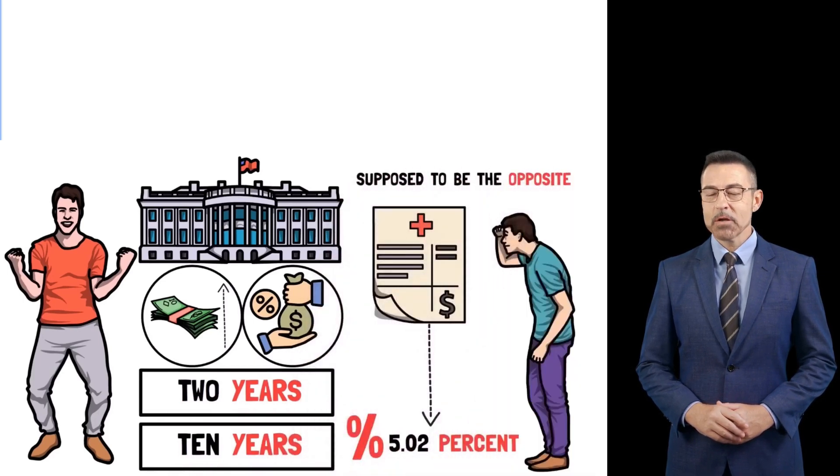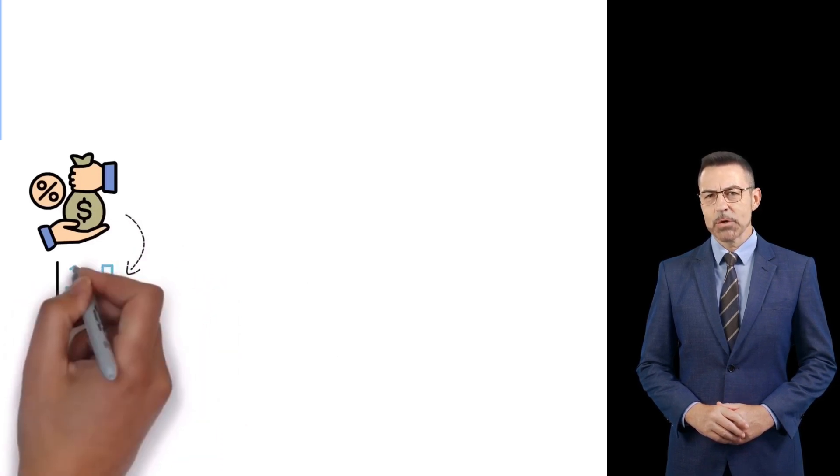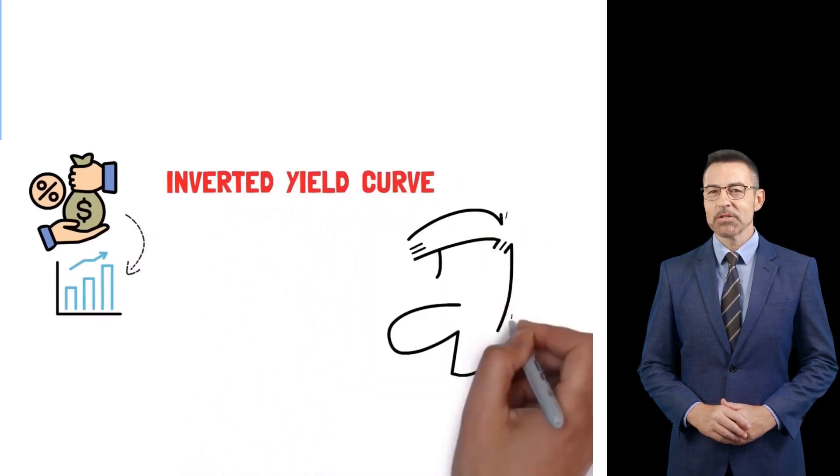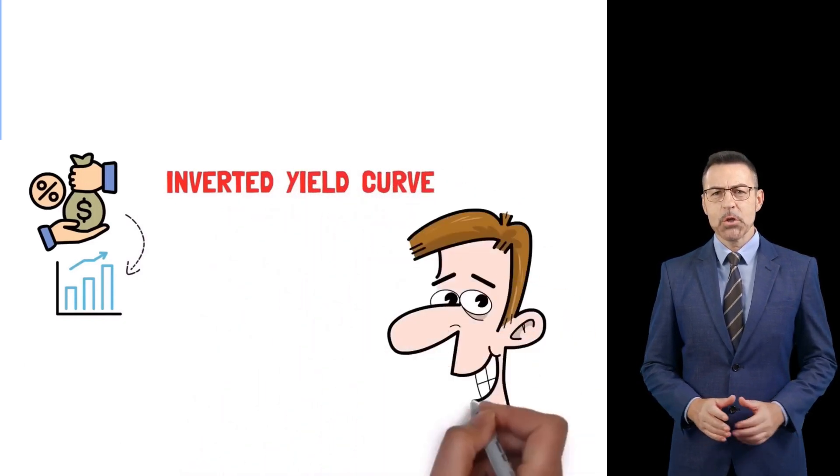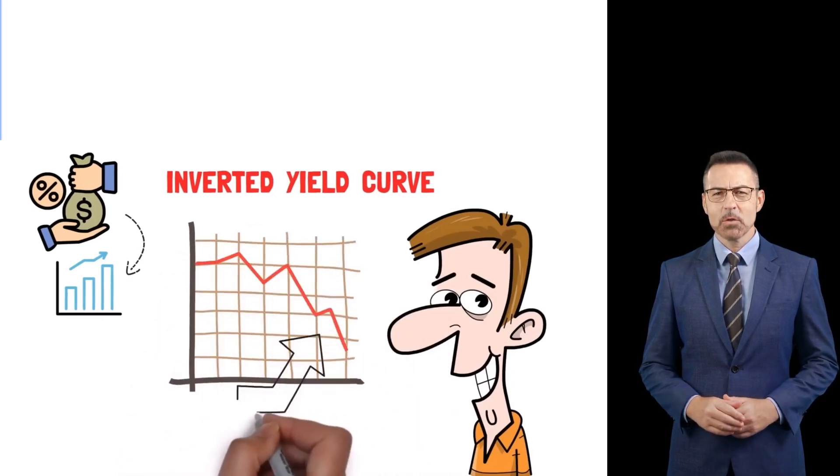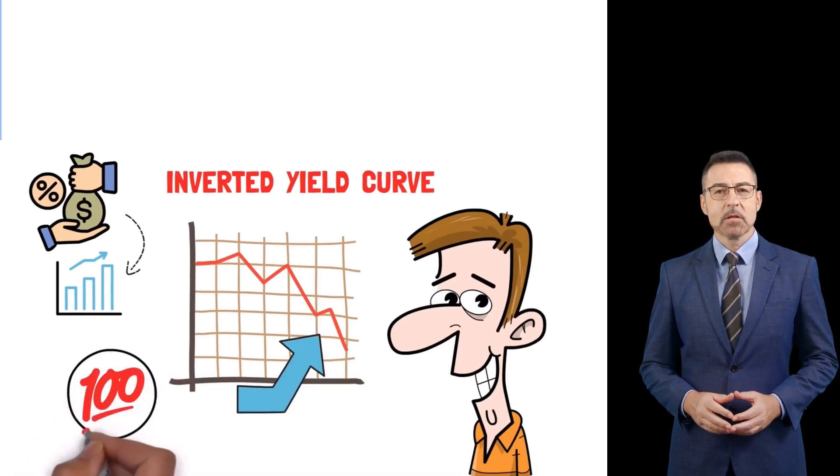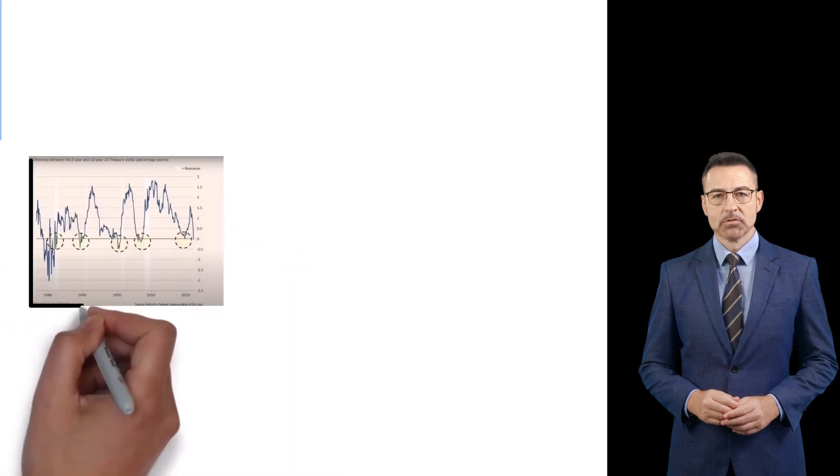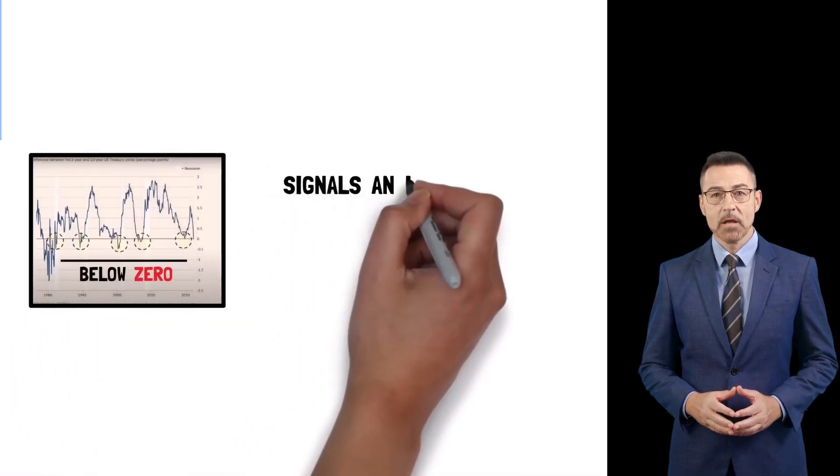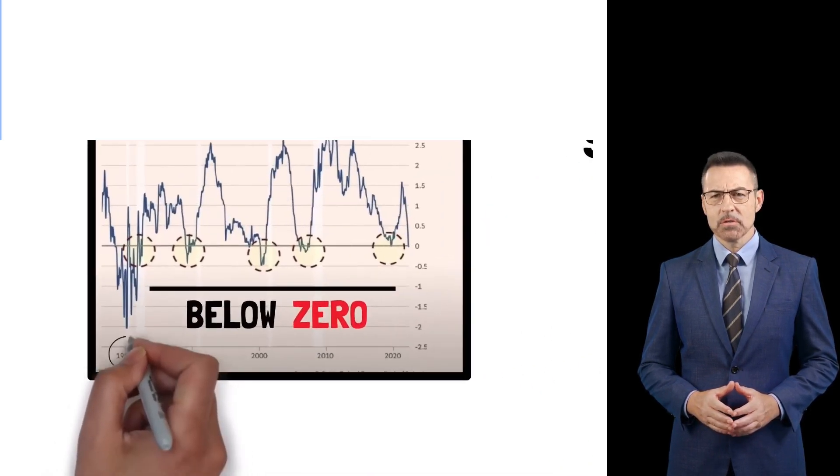Typically, it's supposed to be the opposite, meaning that the longer you let the government borrow, the higher the rate is supposed to be. When the rates are inverted like this, you get something called an inverted yield curve. Long story short, inverted yield curves are the most obvious signal for a recession. When a situation like this happens, the chances of a recession are nearly 100%. If you look at this chart, going back to the late 70s, every single time the line went below zero, which signals an inversion, what followed was a recession.